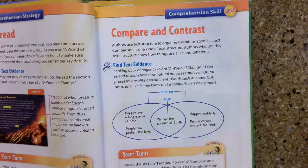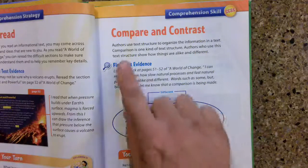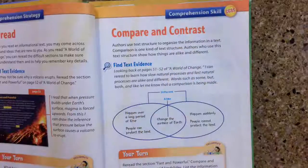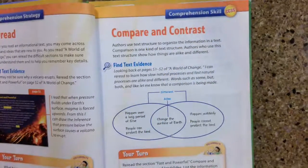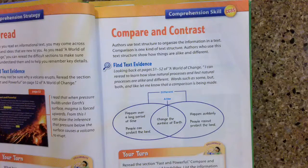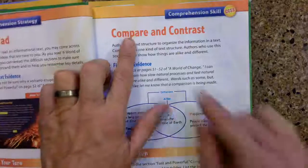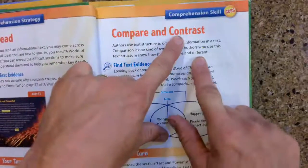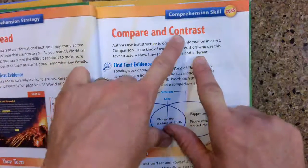Let's read about it. First of all, authors use text structure to organize the information in a text. Comparison is one of the kinds of text structures. Authors who use this text structure show how things are alike and different. So compare means how they are alike and contrast means how they are different.